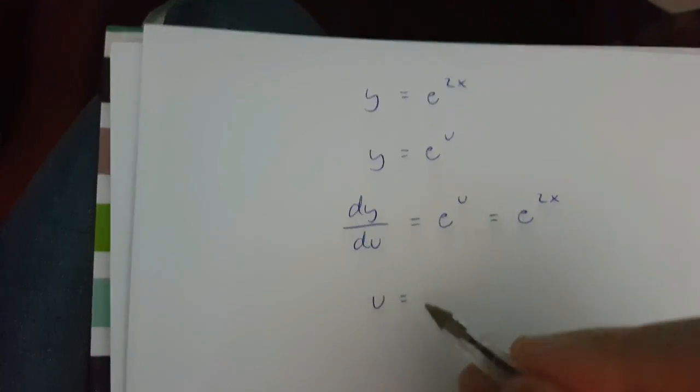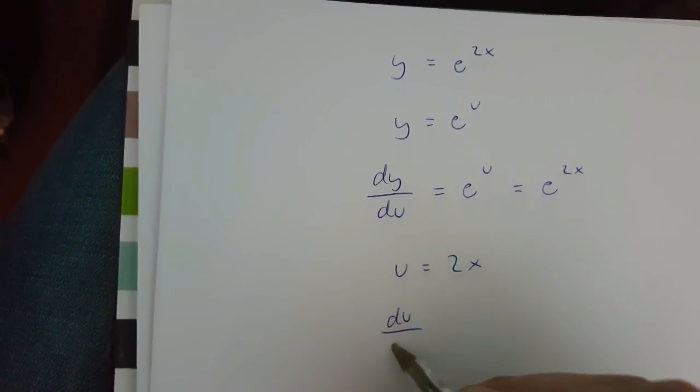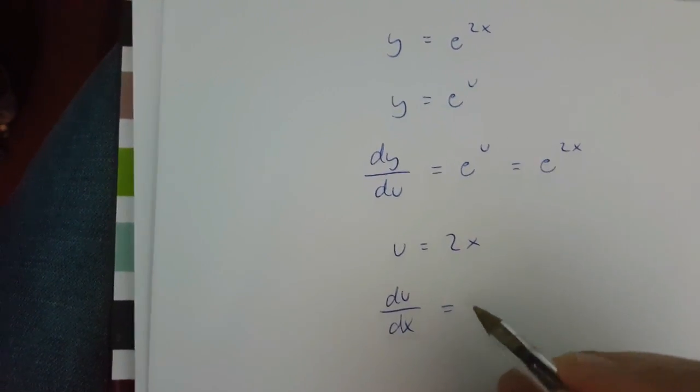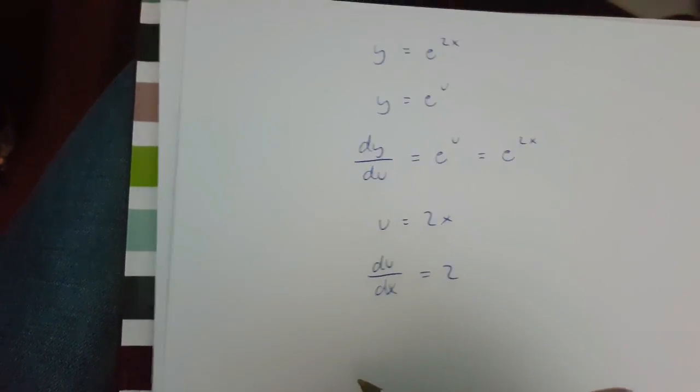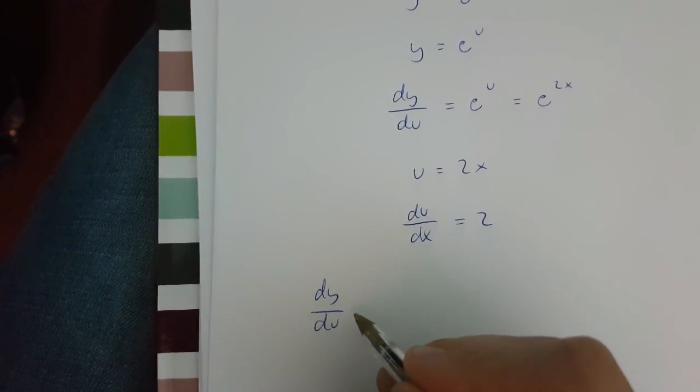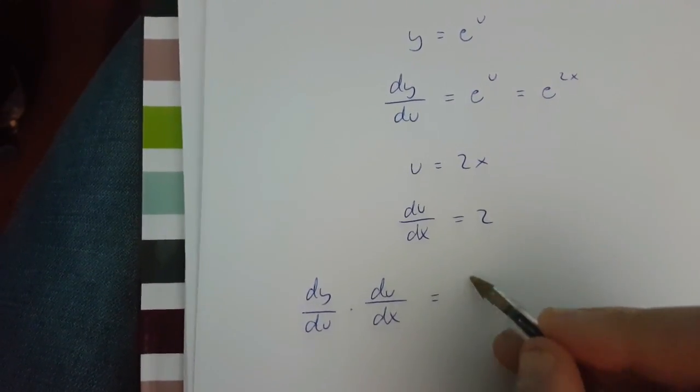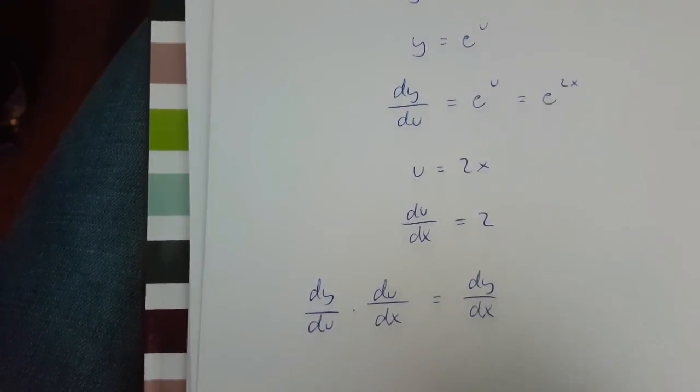Now since u is equal to 2x, du over dx is going to be equal to 2. Now the chain rule goes like this: dy over du times du over dx is dy over dx.